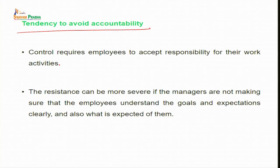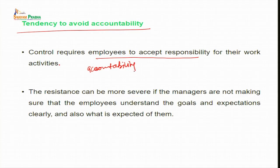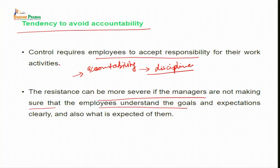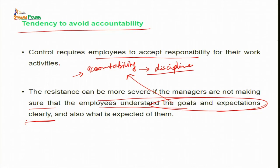The third reason is the tendency to avoid accountability. Control requires employees to accept responsibility for their work activities. In reality, employees often mistakenly associate accountability — which is basic responsibility or answerability — with discipline, feeling that being accountable to their boss is a kind of punishment. The resistance can be more severe if managers do not make sure that employees understand the goals and expectations, which is basically the accountability towards their job.